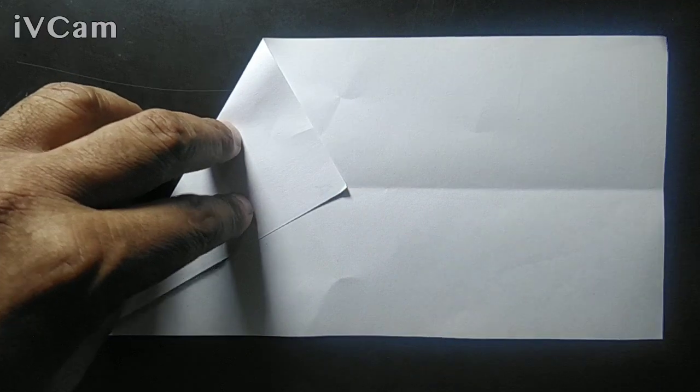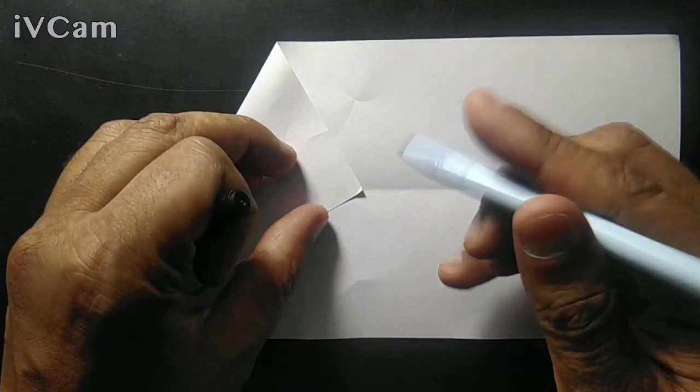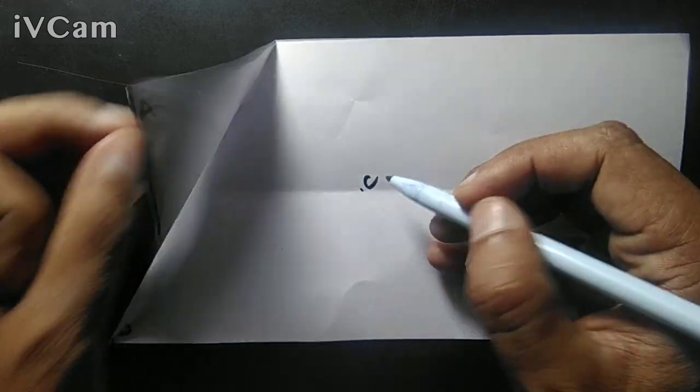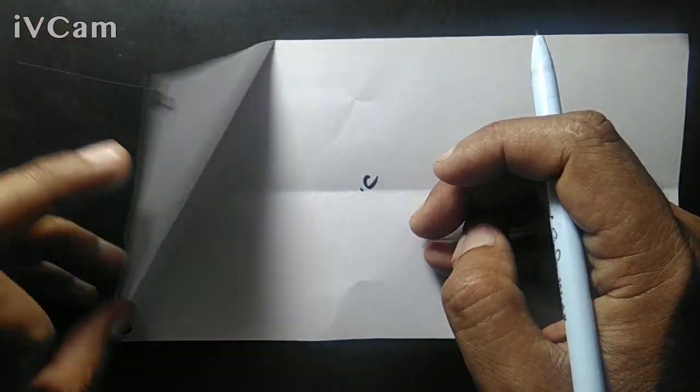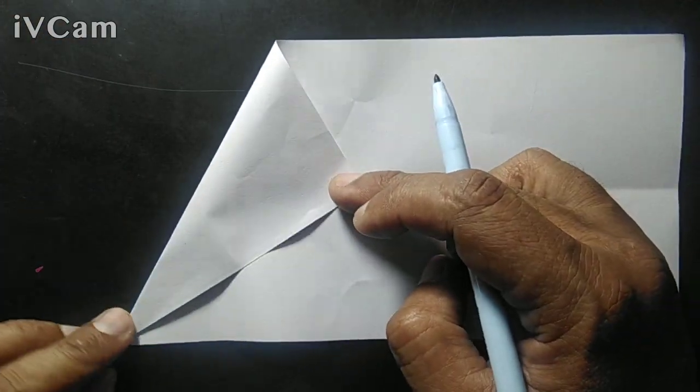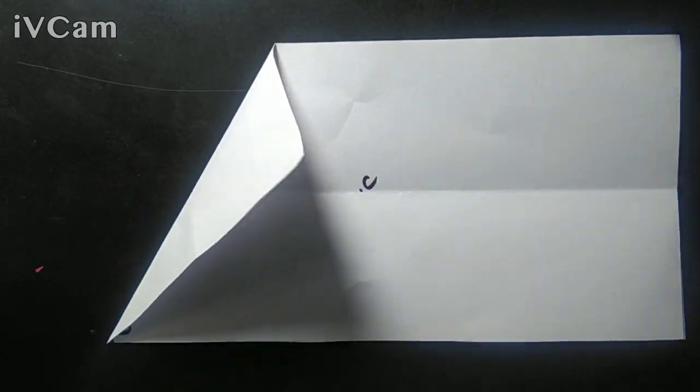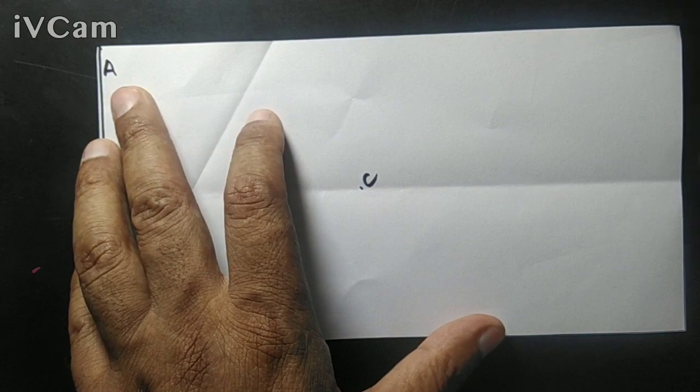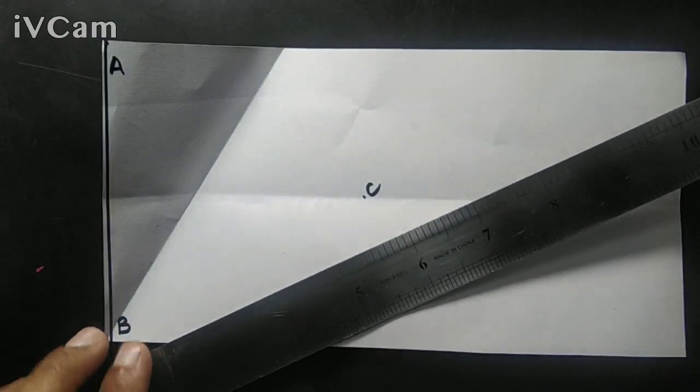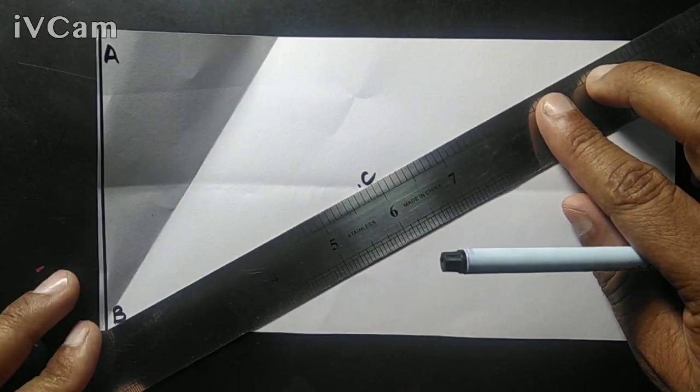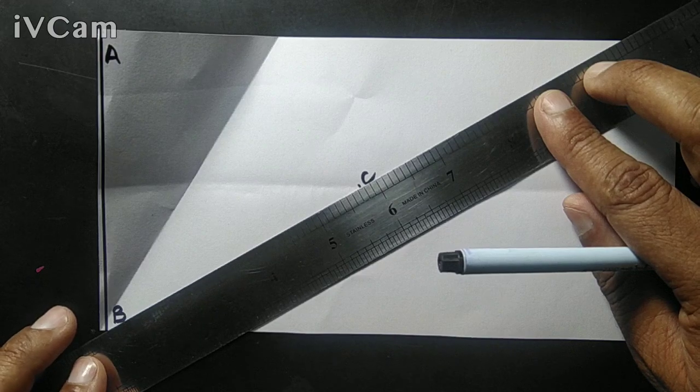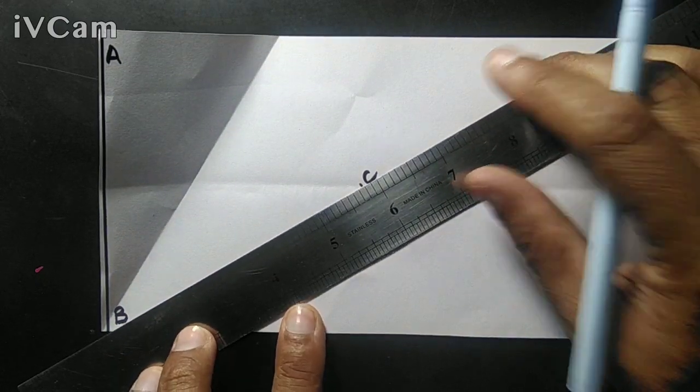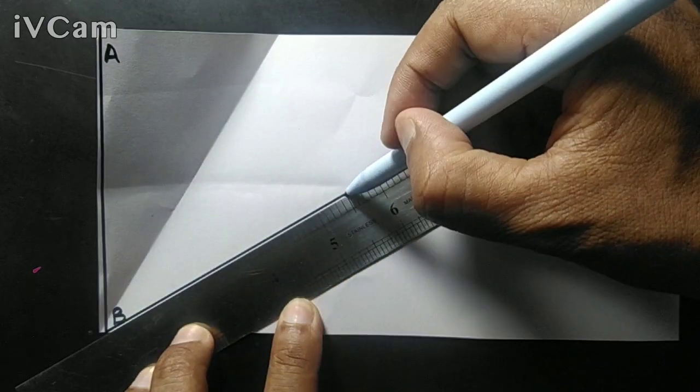Observe that if we write this point, this point to be C, then we have AB equal to BC. We are just copying the line segment AB. We are copying the line segment AB and we get BC.